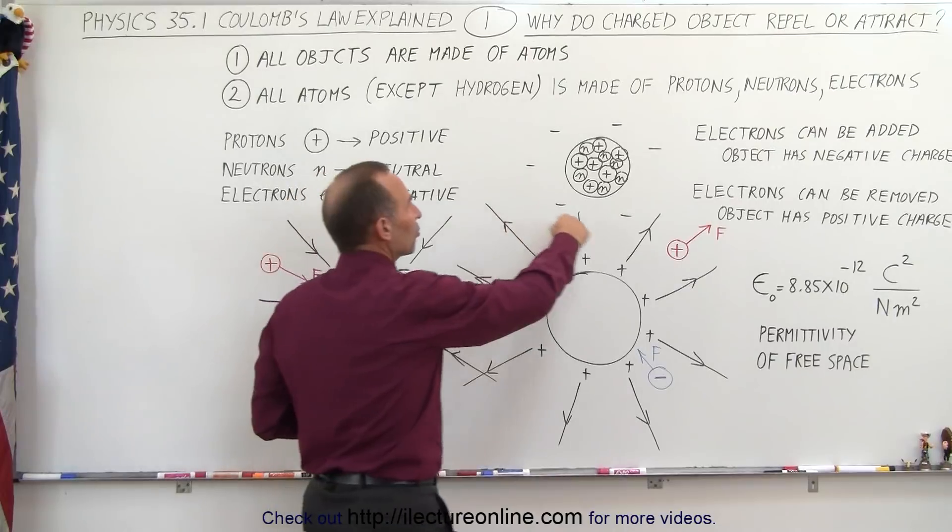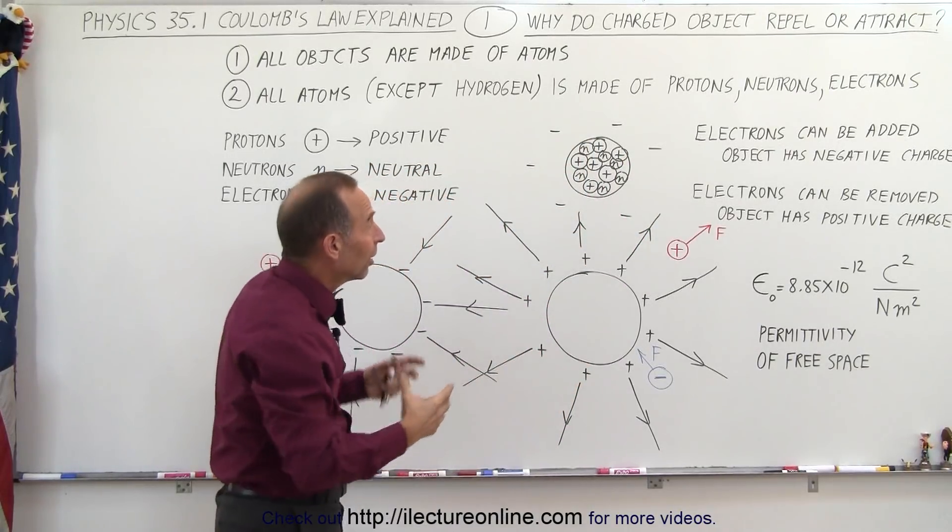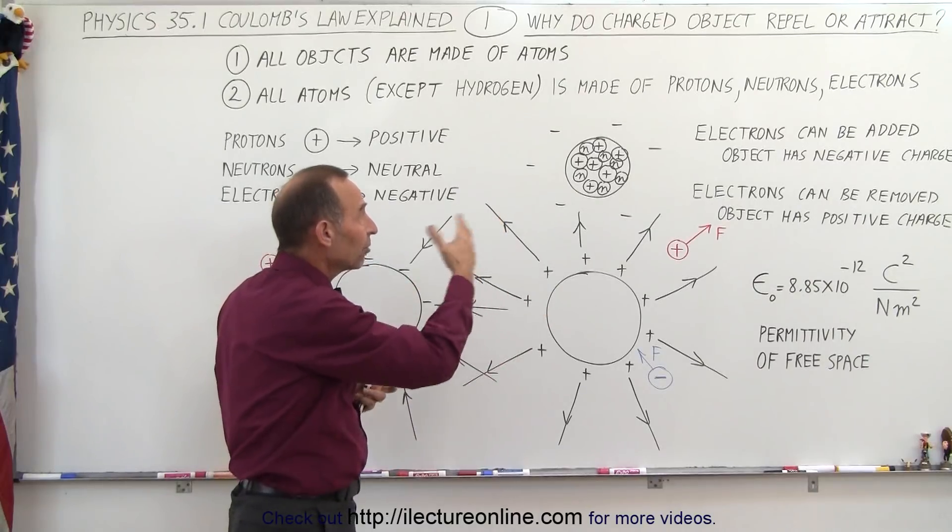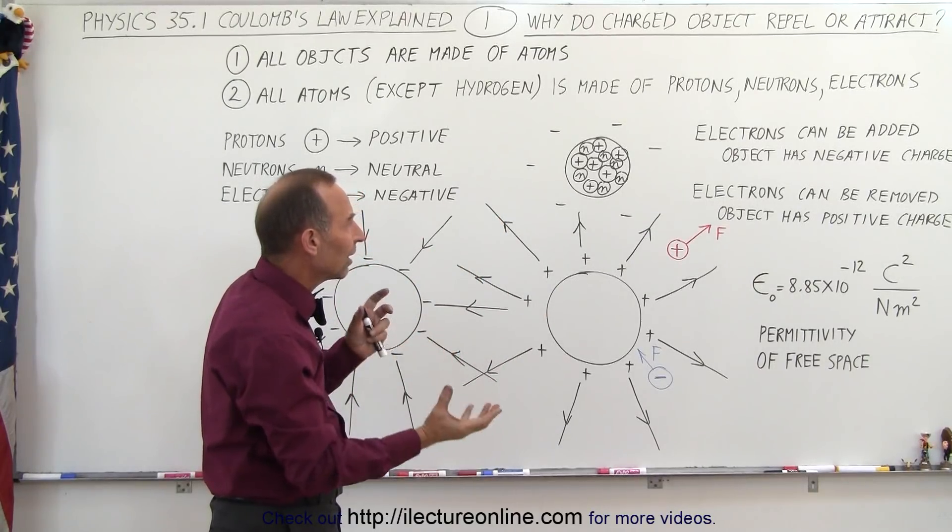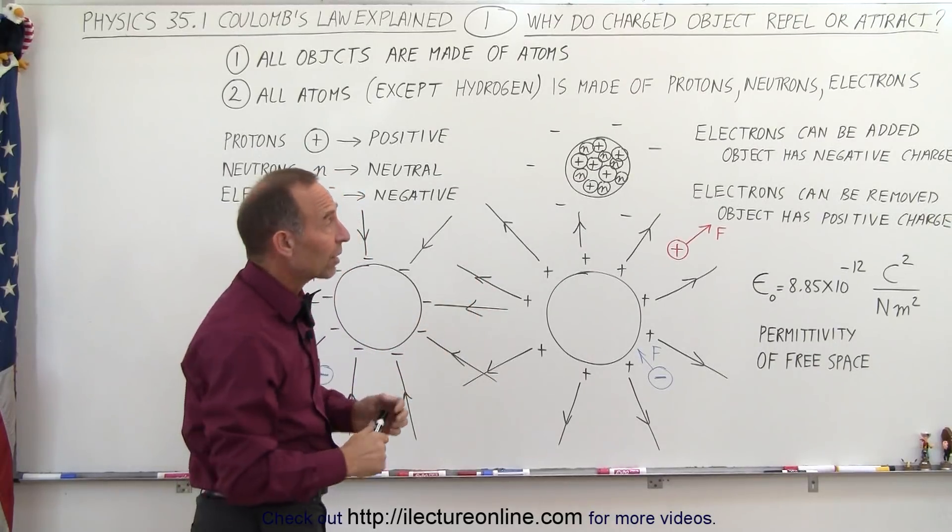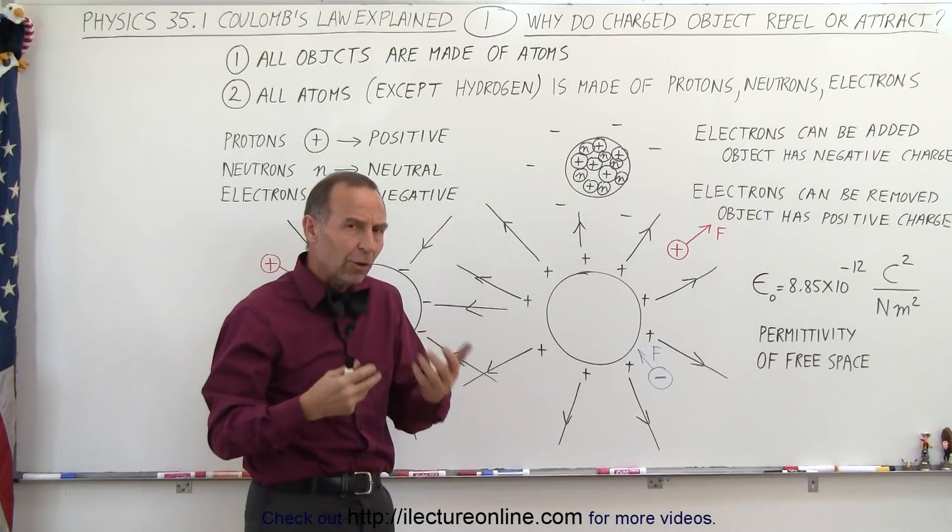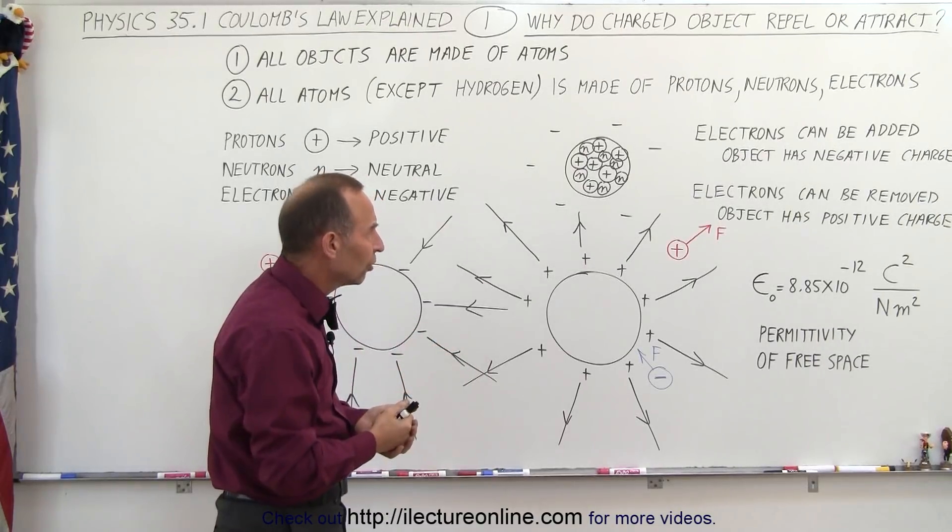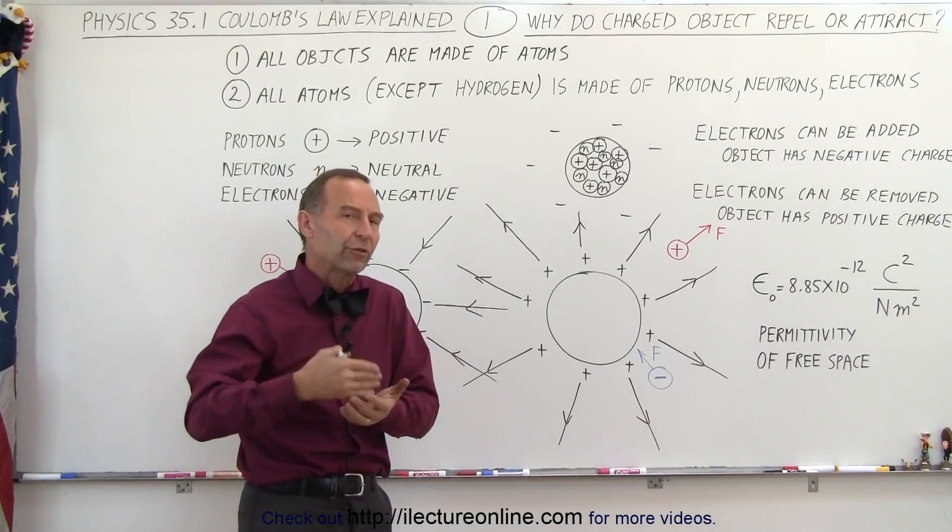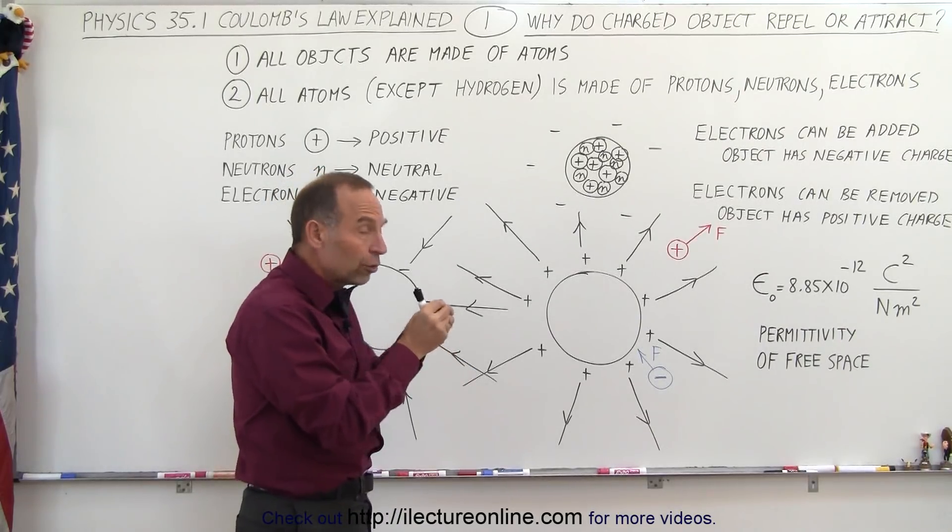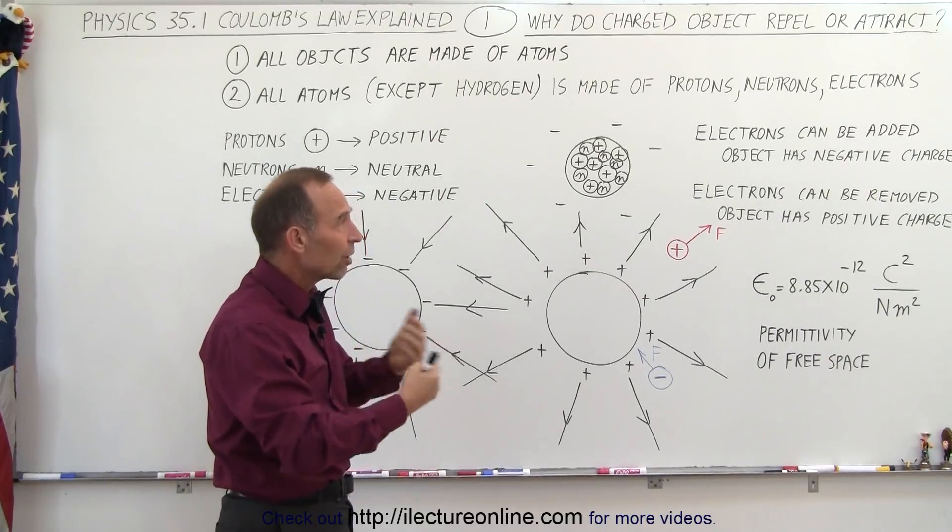The negative charge, the electrons, they zip around the nucleus at quite high speeds because they're attracted to the positive protons, but they somehow stay in a balance so that they don't crash into one another. Now, since objects are all made of positive and negative charges, it turns out that only the electrons can be transferred from one object to another.